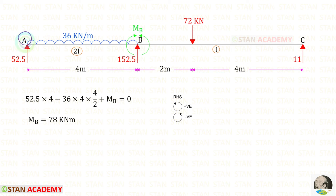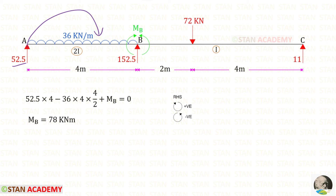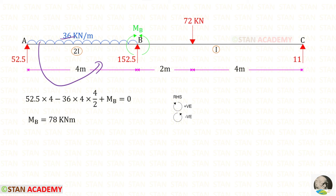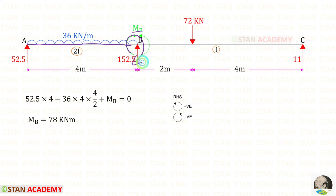From point A, taking moments about B, we find the moment at B, denoted MB. We assume it is a hogging moment. RA acts clockwise over a distance of 4, giving a positive contribution. The UDL acts anticlockwise and is negative, with the standard UDL moment calculation. MB itself acts clockwise and is therefore positive. The result for MB is a positive value, confirming our assumption — MB is indeed a hogging moment.